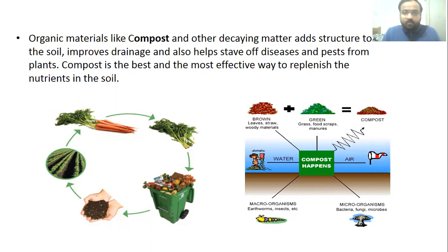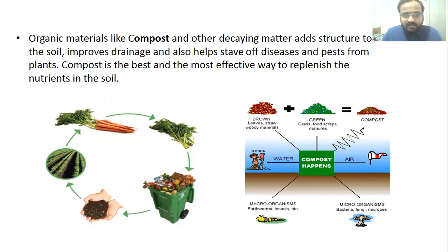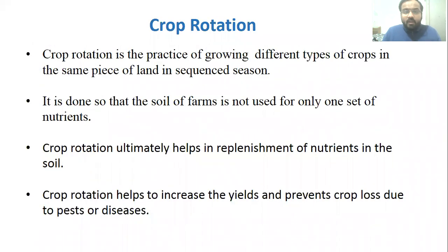Organic materials like compost — which we have studied in sixth standard — and other materials add structure to the soil, improve drainage, and help stave off diseases. Compost helps in preventing diseases and pests from affecting plants. Compost is the best and most effective way to replenish nutrients in the soil because compost is also rich in different nutrients.